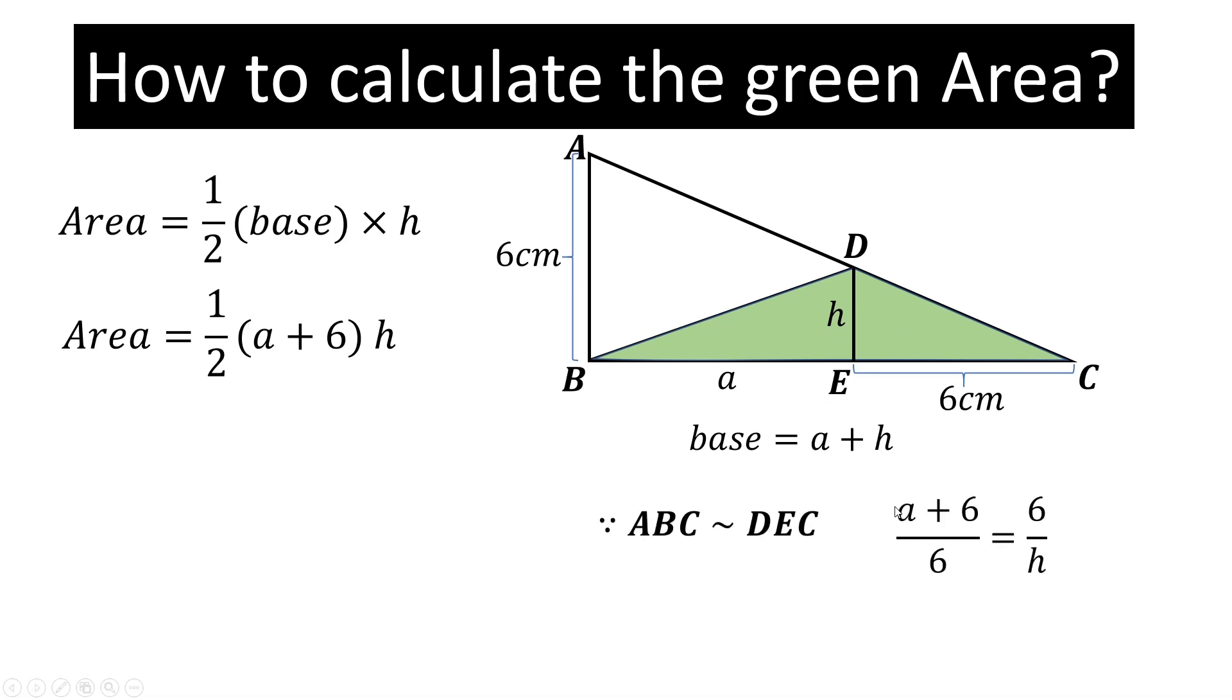If these are similar, we can write (a + 6) by 6 is equal to 6 divided by h. Now simplify this and we can write it in the form (a + 6) times h. (a + 6) times h is equal to 36. We will put this value here.